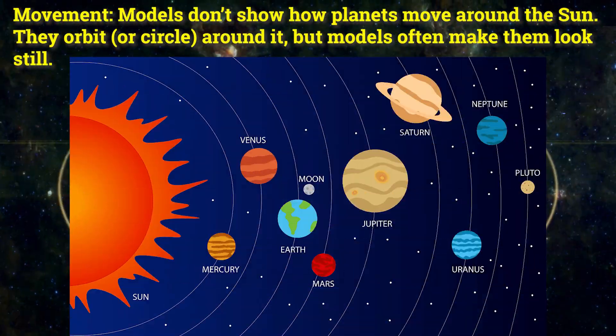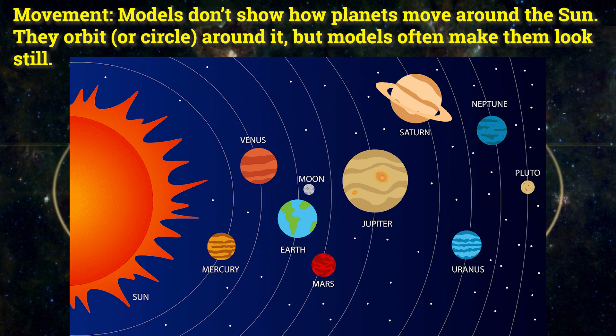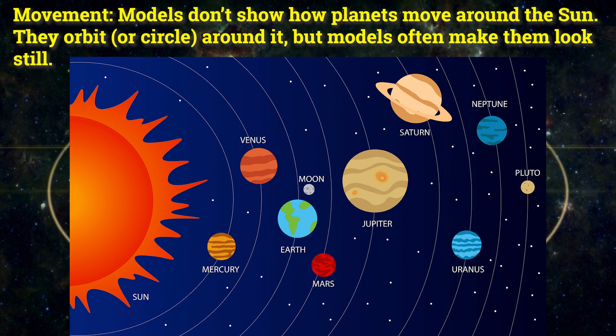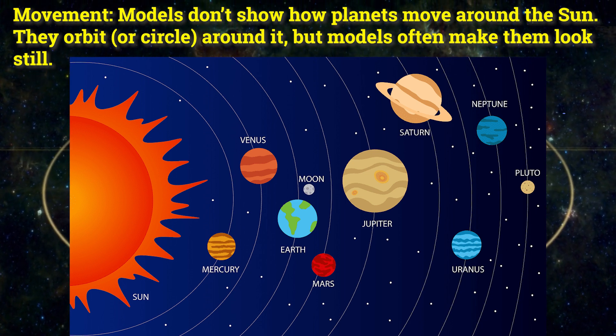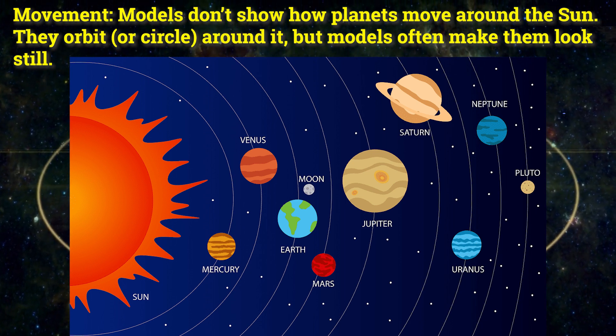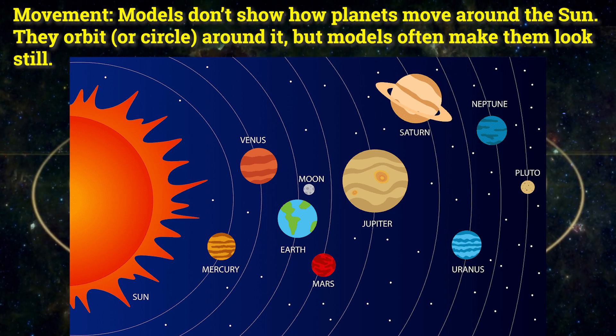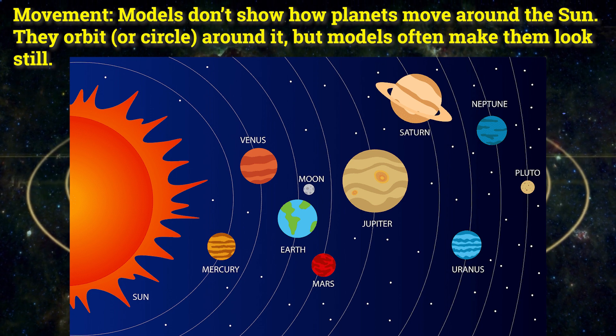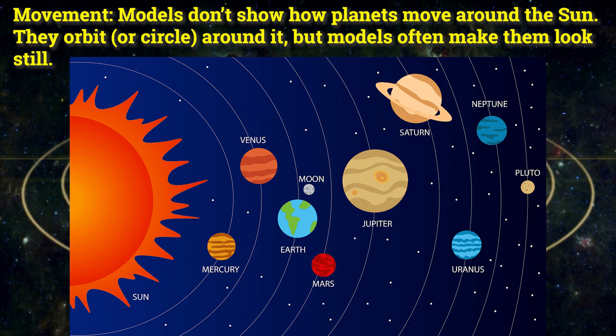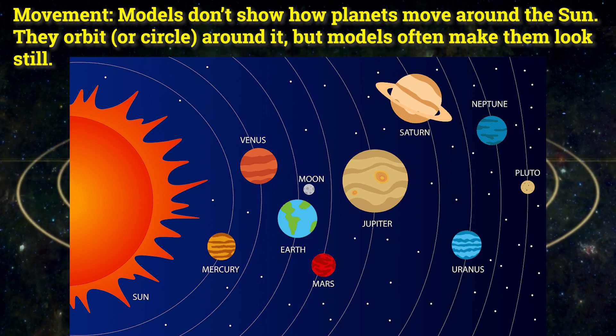Now the third limitation: their movement. Models don't show how planets move around the Sun. They orbit or circle around it, but models often make it look still.